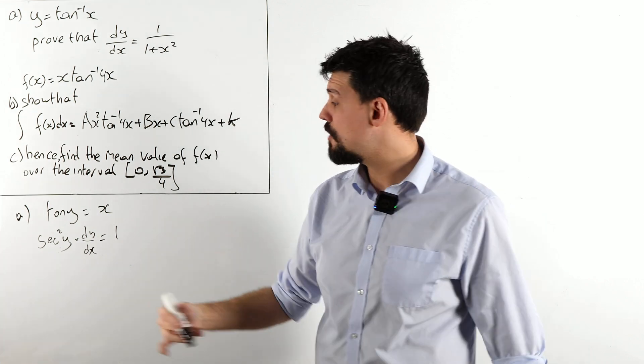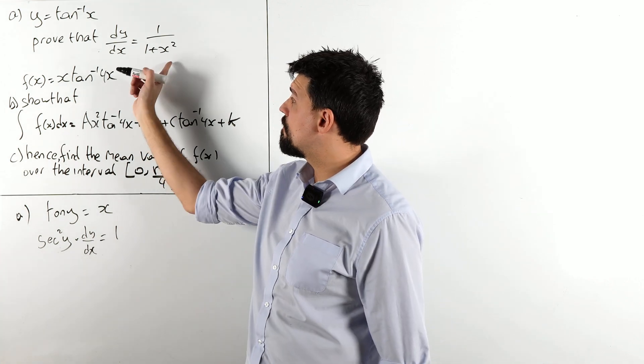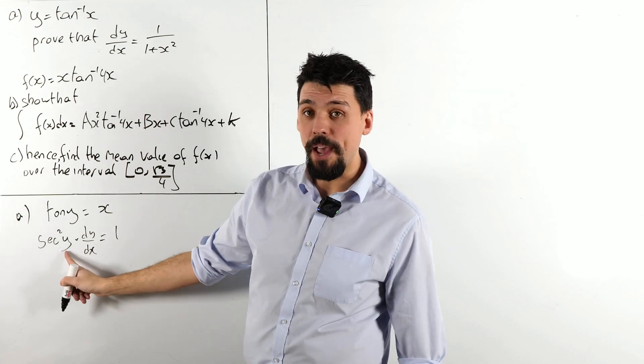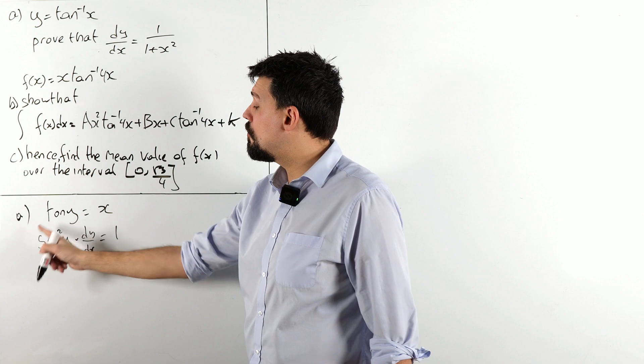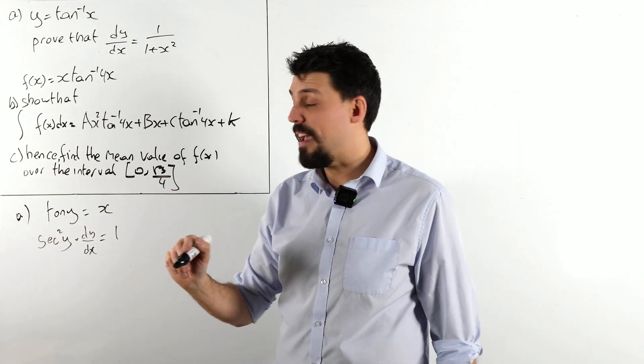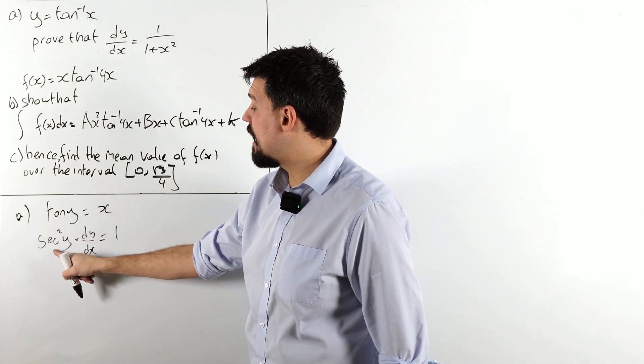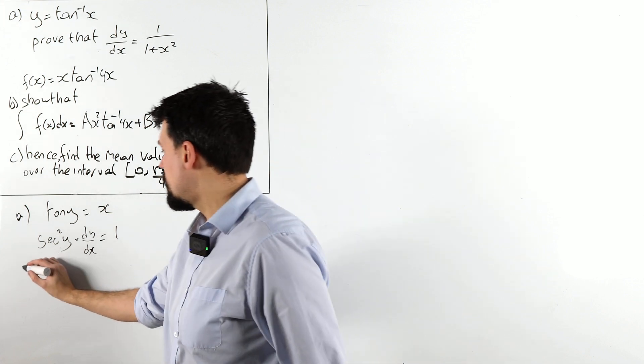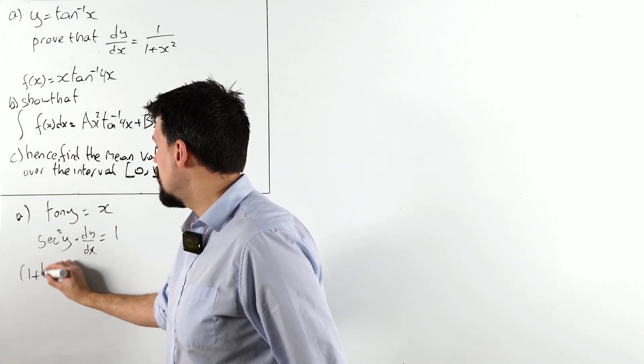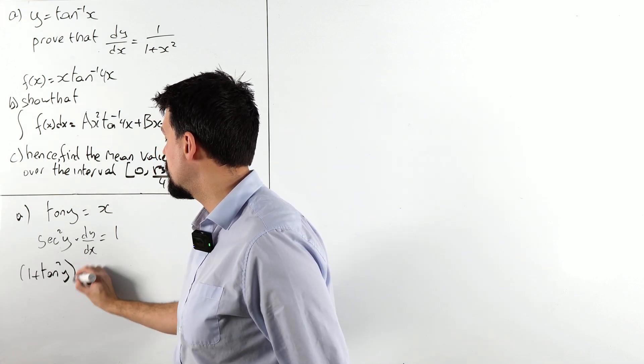As always with inverse functions, I want this in terms of x. This is in terms of y. So really, I want to rearrange sec squared y to expression in terms of x. Luckily, we have an identity that links sec squared and tan.